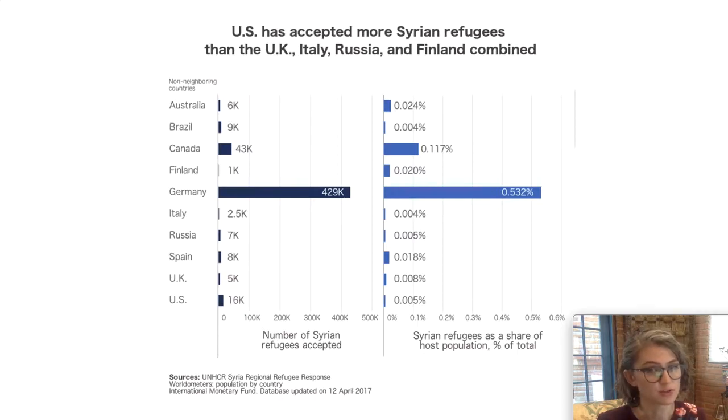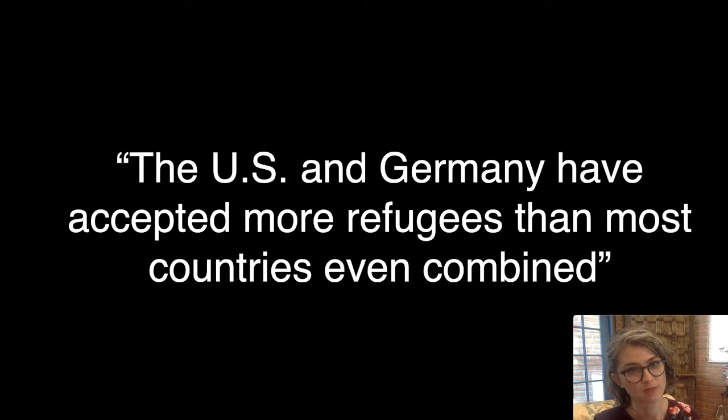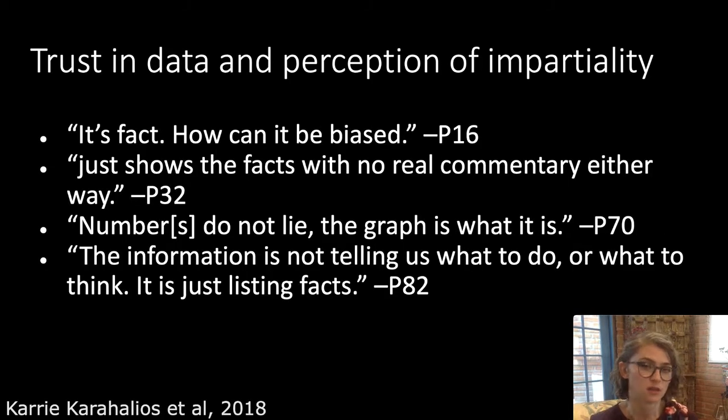When asked some time later to recall the main message of this visualization, participants recalled that the U.S. and Germany have accepted more refugees than most countries even combined, which is not what the message of the visualization was. Later on, when asked about potential biases in what they had seen, 83% of the participants were sure that there weren't any. Here's a selection of quotes from some of them. It's fact. How can it be biased? It just shows the facts with no real commentary either way. Numbers do not lie. The graph is what it is. The information is not telling us what to do or what to think. It's just listing facts.